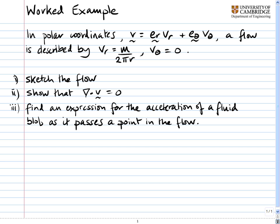In polar coordinates, where the velocity vector is e_r v_r plus e_theta v_theta, a flow is described by v_r equals m over 2πr, v_theta equals 0.